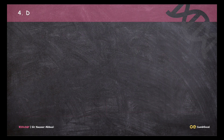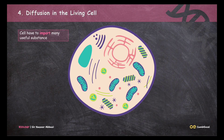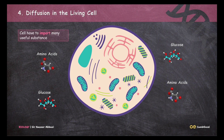Next, we will see how diffusion works in a living cell. Let's imagine a living cell. This cell has to import a lot of useful substances because it has to perform many functions — grow, make new organelles, and make new metabolites. To continue its metabolic activity, the cell has to import building blocks such as glucose and amino acids, and these substances move into the cell through diffusion.